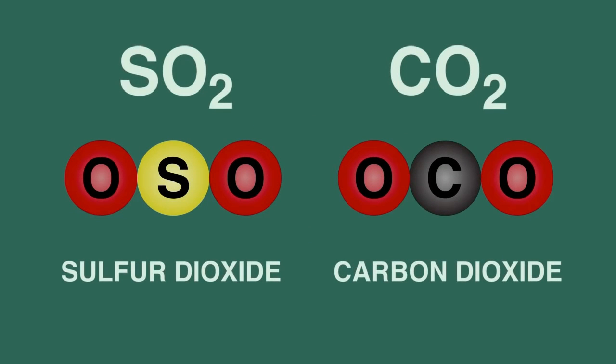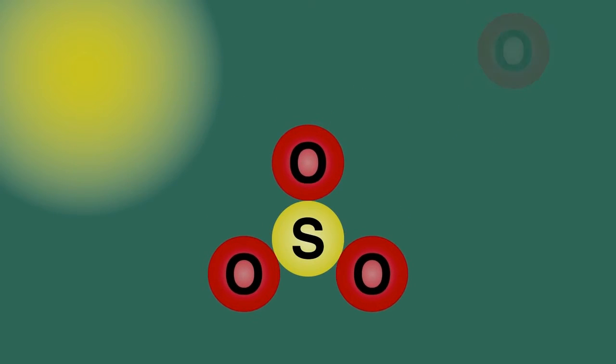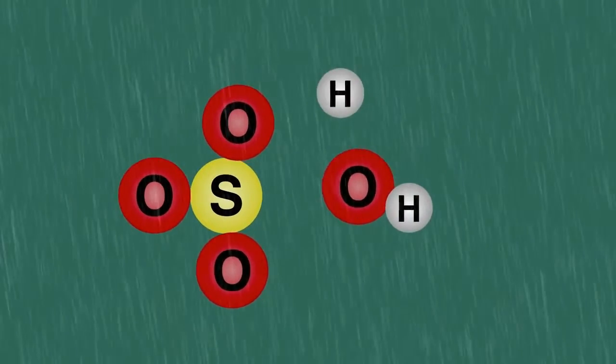In the presence of sunlight, a photochemical reaction will take place, where sulfur dioxide reacts with more oxygen to form sulfur trioxide. This dissolves in the rainwater, forming sulfuric acid.